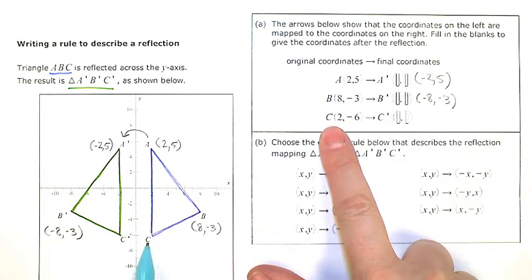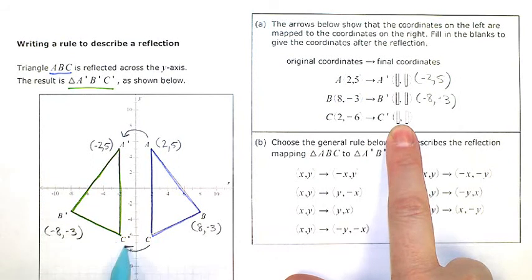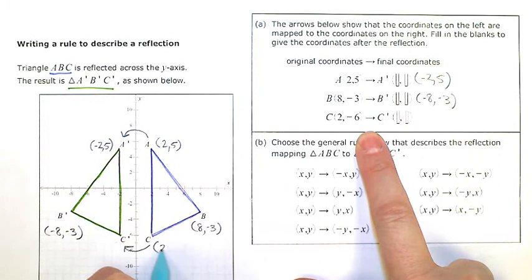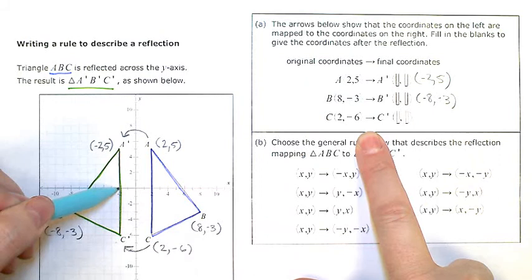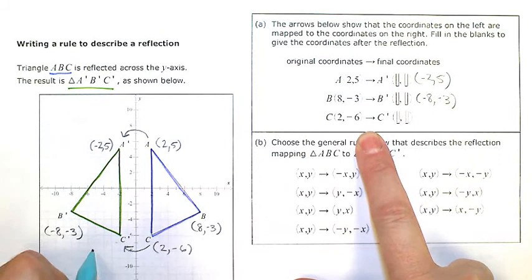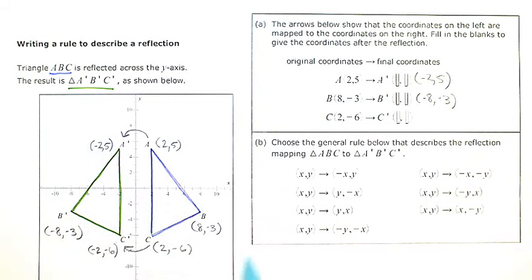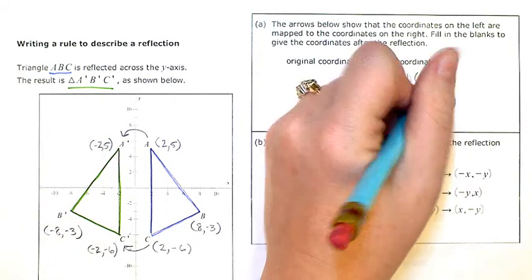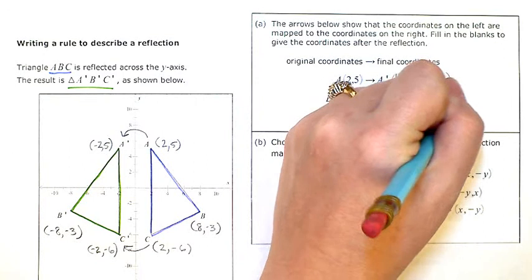C is mapped to C' over here. Started out as 2, negative 6, and after the reflection, I'm at negative 2, negative 6. So let me fill in this last one, negative 2, negative 6.